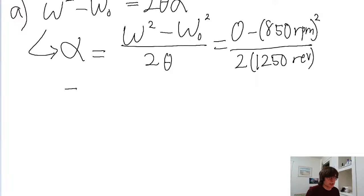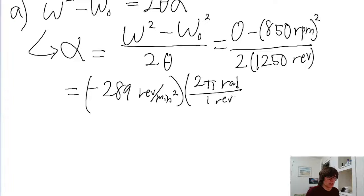This gives us an angular acceleration of negative 289 revolutions per minute squared, but we want to convert this into radians per second squared. So we convert from revolutions to radians by multiplying by 2 pi radians per 1 revolution.